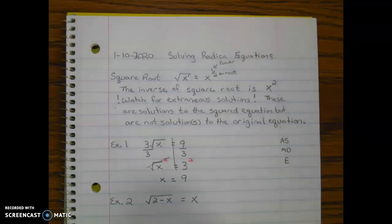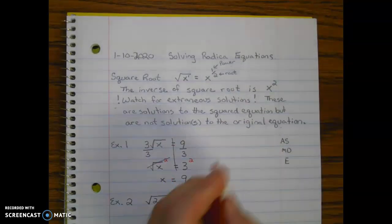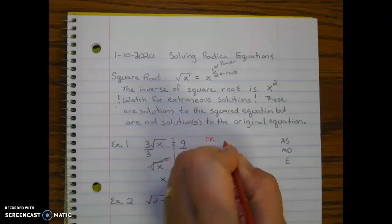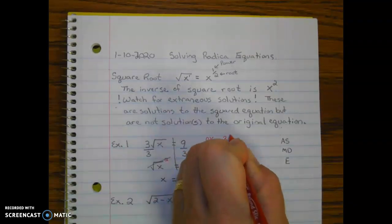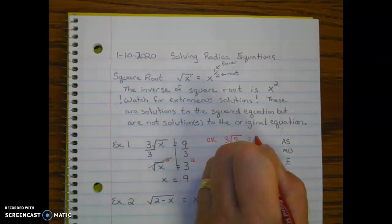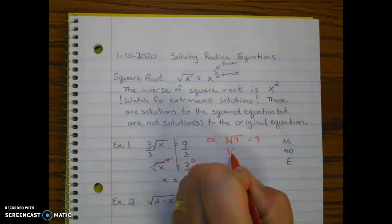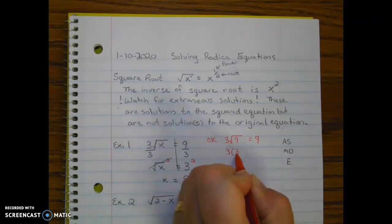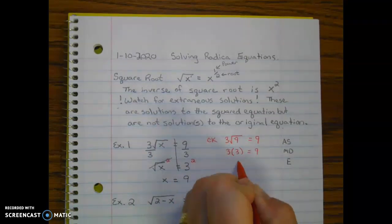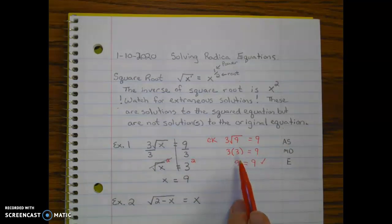To determine if this is an extraneous solution, we plug it back in and check. We get 3 times the square root of 9 equals 9, which simplifies to 3 times 3 equals 9, giving us 9 equals 9. That checks out. For all problems, you'll want to do a check to make sure your answer works.